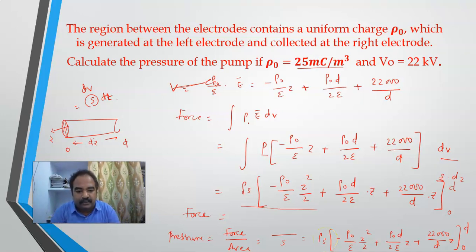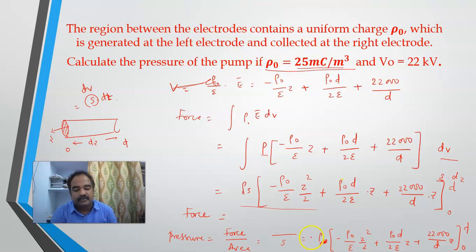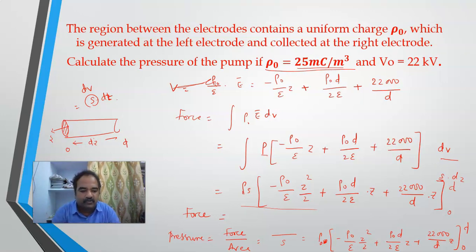I know the value of rho naught, which is 25 millicoulombs per meter cube. Epsilon equals epsilon naught times epsilon r. Taking epsilon r equal to 1, epsilon naught is 8.85 times 10 to the power of minus 12. Substituting all known values will give the final pressure of the pump. Hope you solved the problem and get back to the next slide.